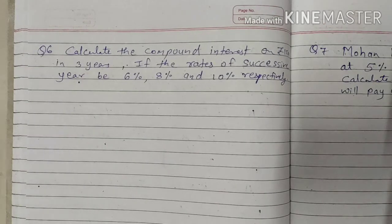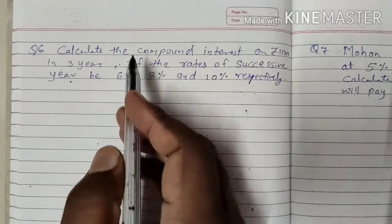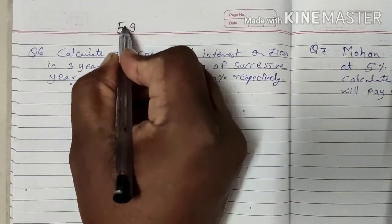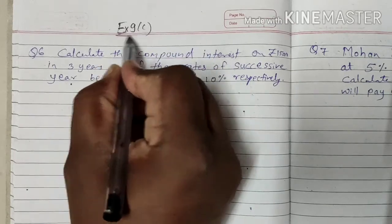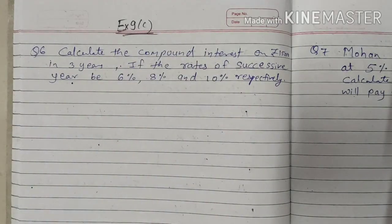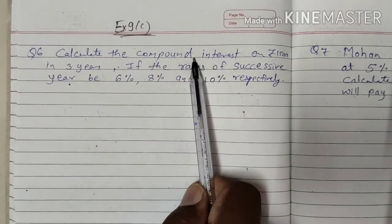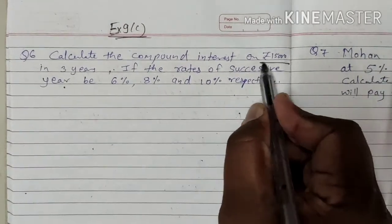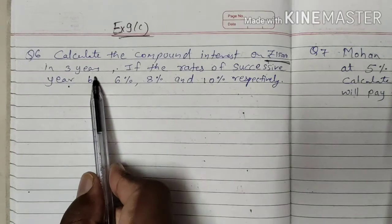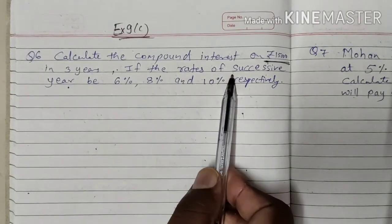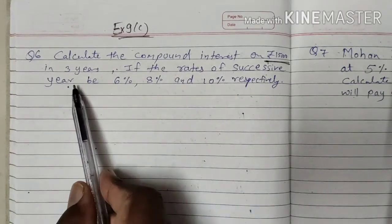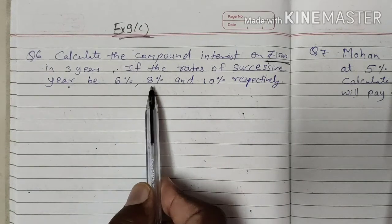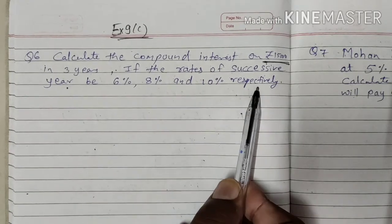Good afternoon students. We are continuing with exercise 9C, question number 6. We are solving: Calculate the compound interest on Rs. 15,000 in 3 years if the successive rate of interest for each year be 6%, 8%, and 10% respectively.